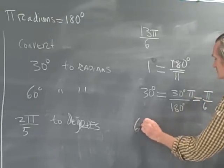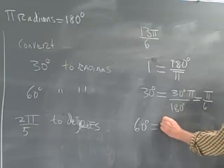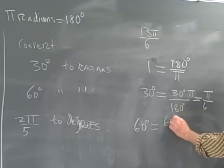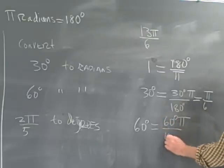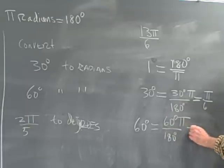60 degrees, similarly, is going to be equal to 60π over 180. 60 degrees times π over 180 degrees. So that's going to be π over 3.